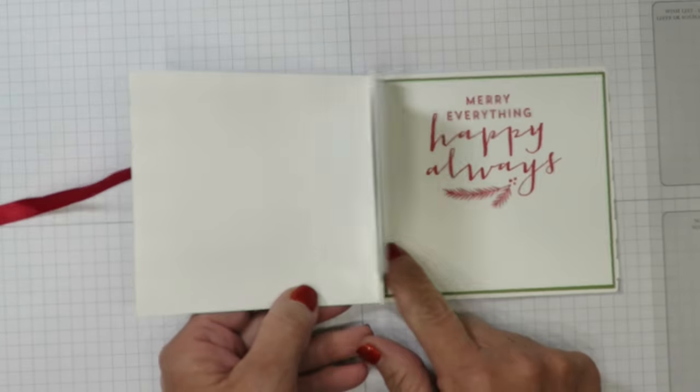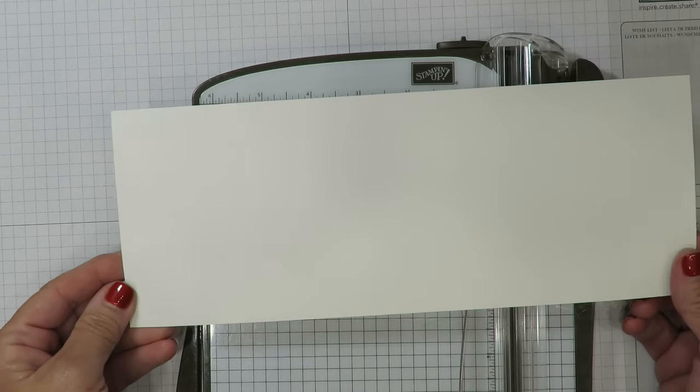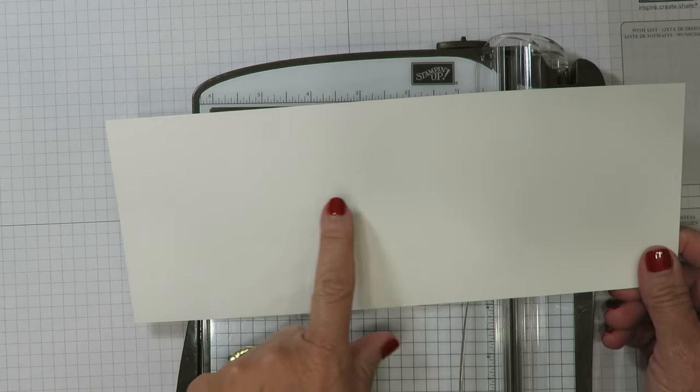This is really simple. Let me show you how to put it together. I've cut a piece of whisper white cardstock. This is four and a quarter by eleven.